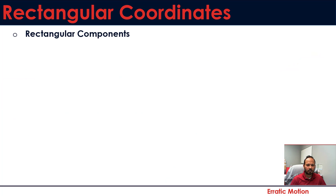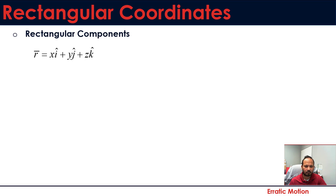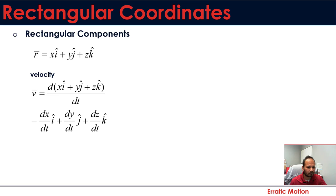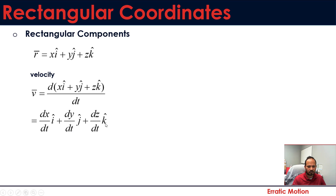In rectangular coordinates, curvilinear motion is often best represented by defining the position with respect to time as functions of x, y, and z. To find velocity — which is the first derivative — you take each direction separately and differentiate with respect to time: dx/dt gives the i-direction component, dy/dt gives the j-direction component, and dz/dt gives the k-direction component.